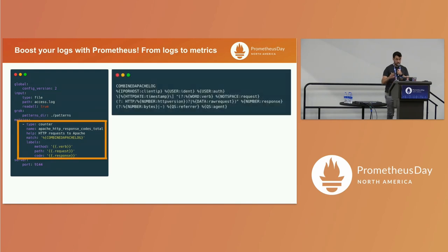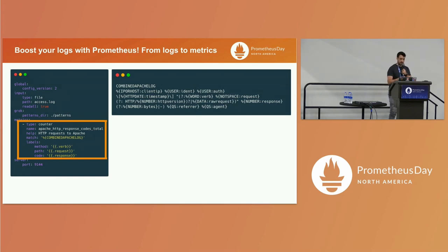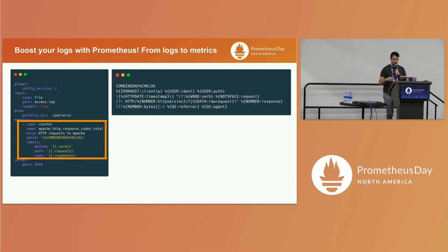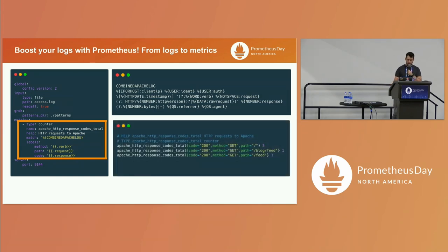It may seem confusing because we only see IP, host, or user. But on the other side of the label, we have the information that we are saving. We can see the double brackets for request and response already present in the pattern called combined Apache log. Using these patterns we can recover the information and create this metric from the log information.